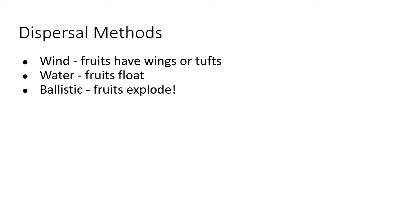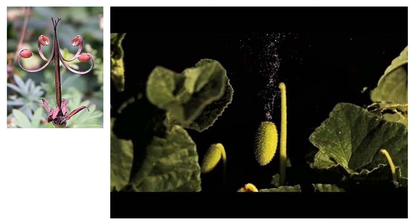That's a good dispersal method for them — they don't want to get far away because they want to find a susceptible host, which is likely close by. Here we have a fruit that is dehiscent at maturity: it's dry, and when it dries out it opens up, splitting along the seam and curling upward, which hurls that seed out. So each of these used to contain a seed that then got hurled out into the environment — that's ballistic dispersal because it is shooting that seed off.